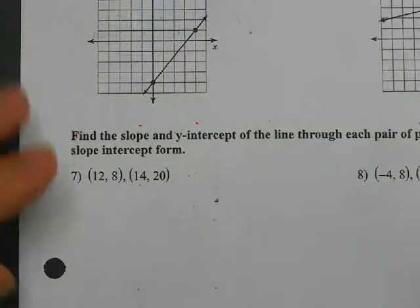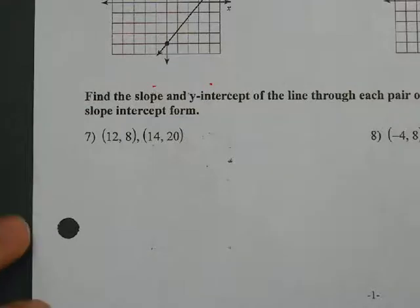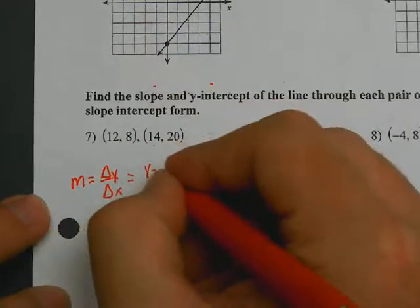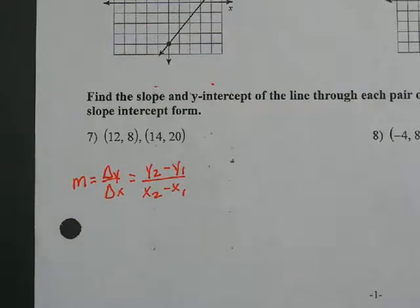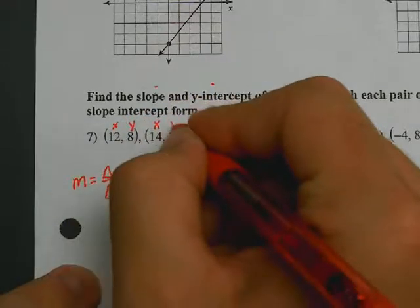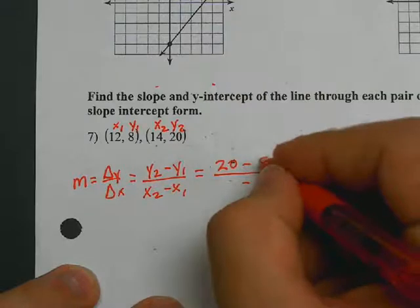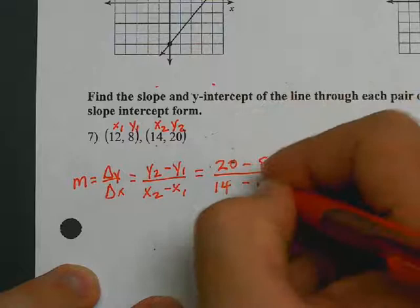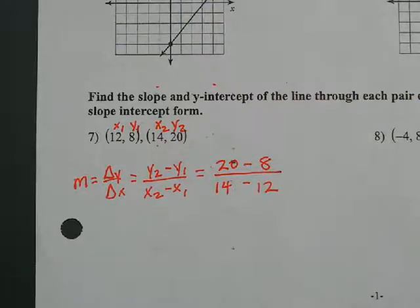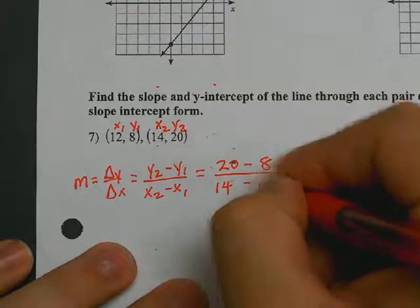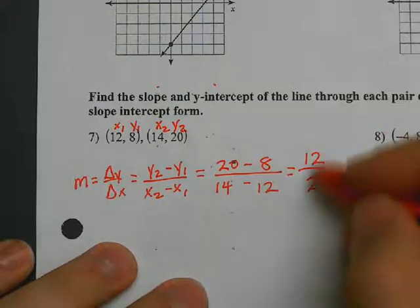Let's skip down to number seven. With number seven, you've got to find slope, y-intercept, and write an equation. Slope is pretty easy — slope is the change in y over the change in x, which is the formula y2 minus y1 over x2 minus x1. After I write my formula, I label my points: x, y, x, y — 1, 1, 2, 2. Then I fill that in: y2 is 20, y1 is 8, x2 is 14, x1 is 12. So 20 minus 8 is 12, and 14 minus 12 is 2. 12 over 2 is 6.